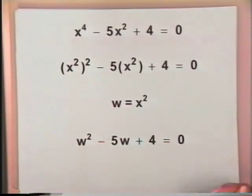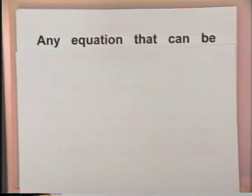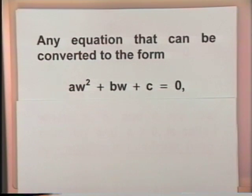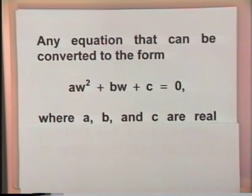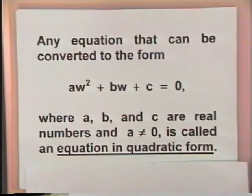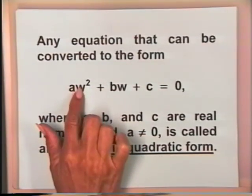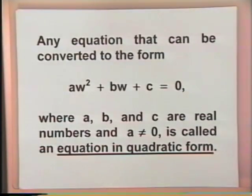An equation that can be converted to quadratic form is called an equation in quadratic form. Any equation that can be converted to the form aw squared plus bw plus c equals 0, where a, b, and c are real numbers and a does not equal 0, is called an equation in quadratic form. It is important as we work through this lesson that we learn to recognize which equations are equations in quadratic form — we must know which equations can be converted to quadratic form.